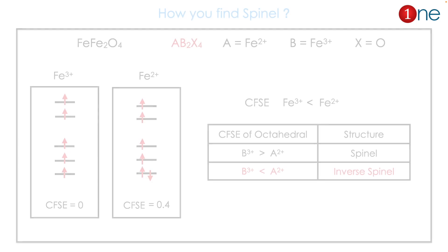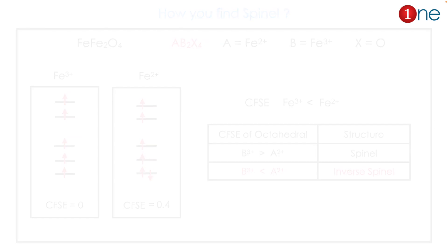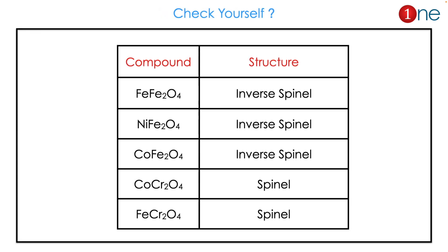Here I have given the example of Fe₃O₄, where both divalent and trivalent are iron — Fe³⁺ and Fe²⁺. The CFSE for Fe³⁺ is 0 and for Fe²⁺ is 0.4, so Fe²⁺ has higher energy. Therefore, it is an inverse spinel.